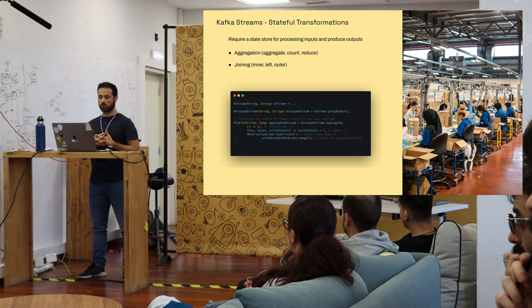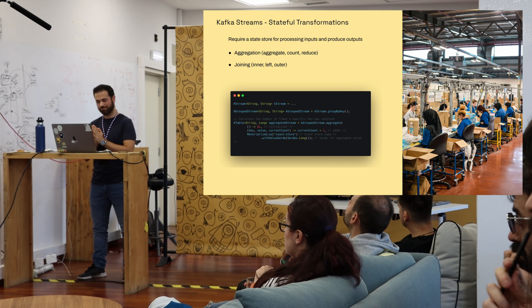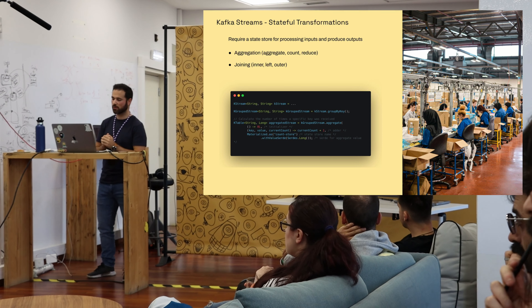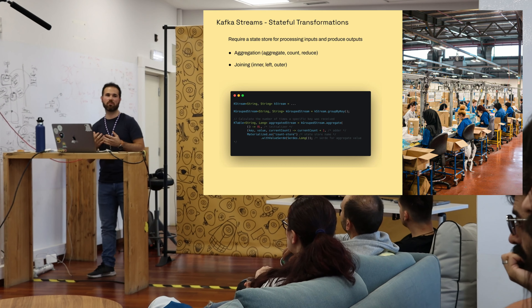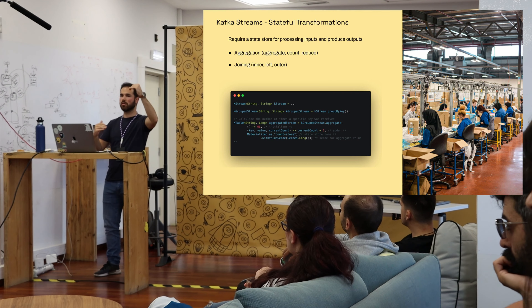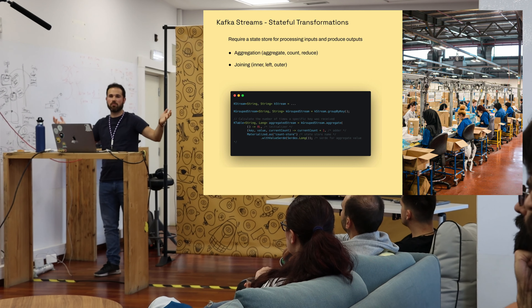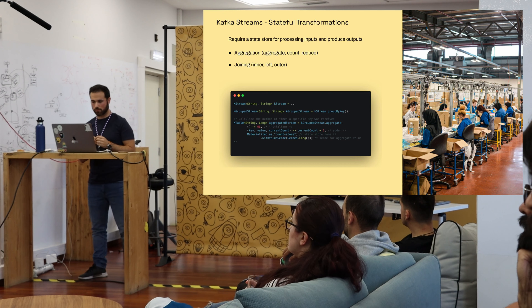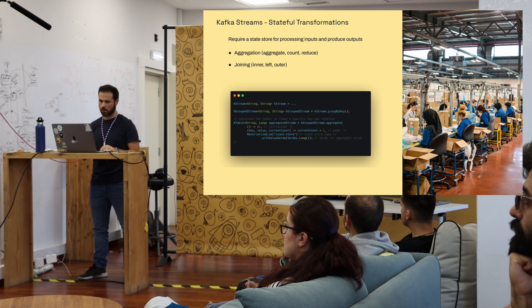For stateful transformations, you can aggregate things. When you aggregate different streams, you need a time window because it's an unbounded flow of data — you can't aggregate an infinite stream with another infinite stream, so you define a window. That's something to consider when working with stateful aggregations.